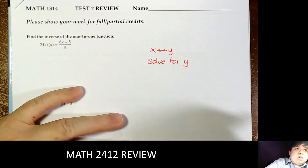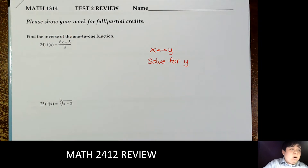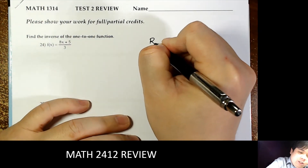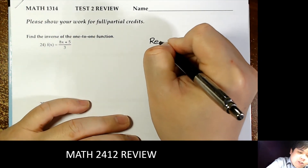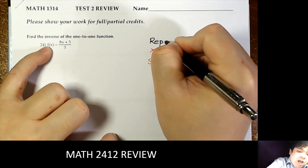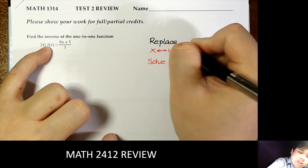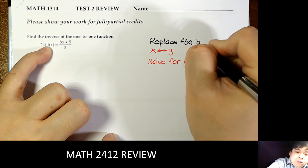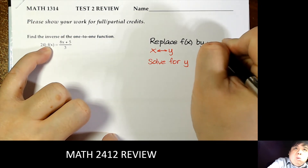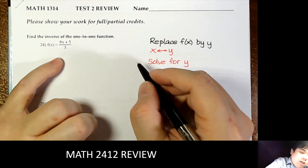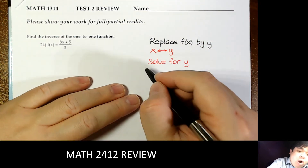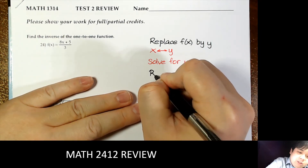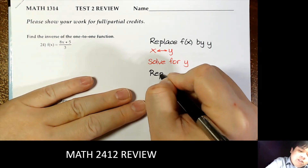These two are the most important steps. The other two steps are to replace f(x) by y, and after that replace y by the inverse notation.